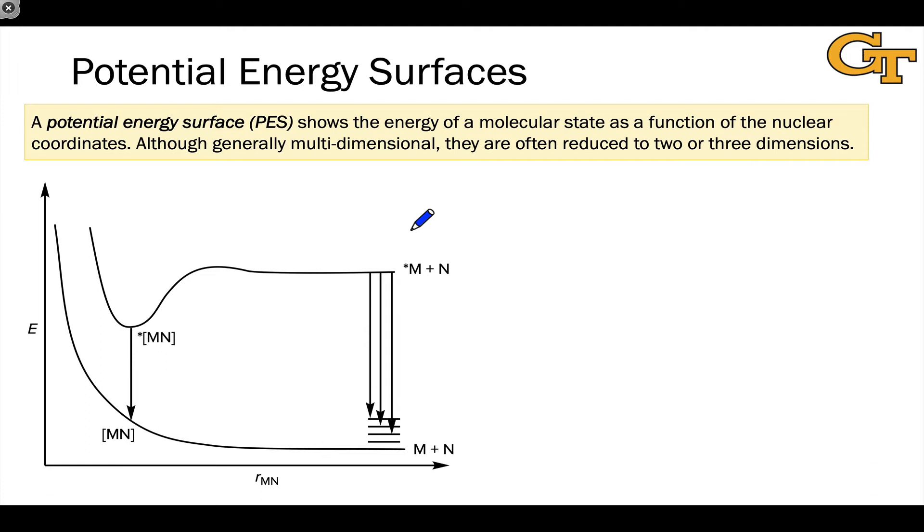And we represent how the energy of that molecule or molecules changes as that coordinate changes. For example, here we have actually two potential energy surfaces represented on the diagram. The y-axis is energy, the energy of the ensemble.